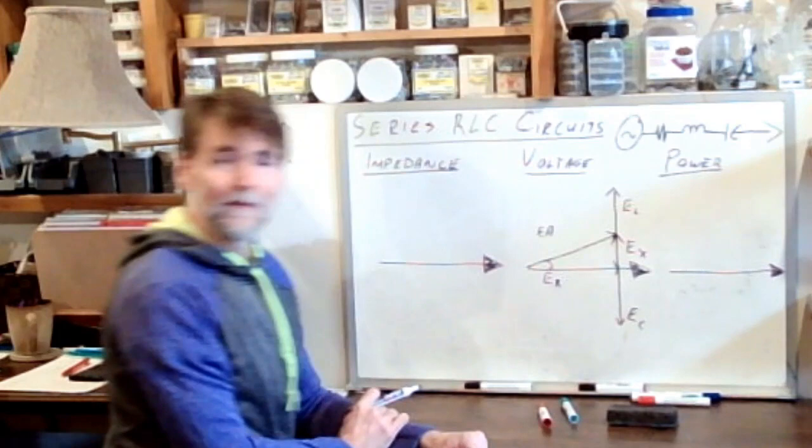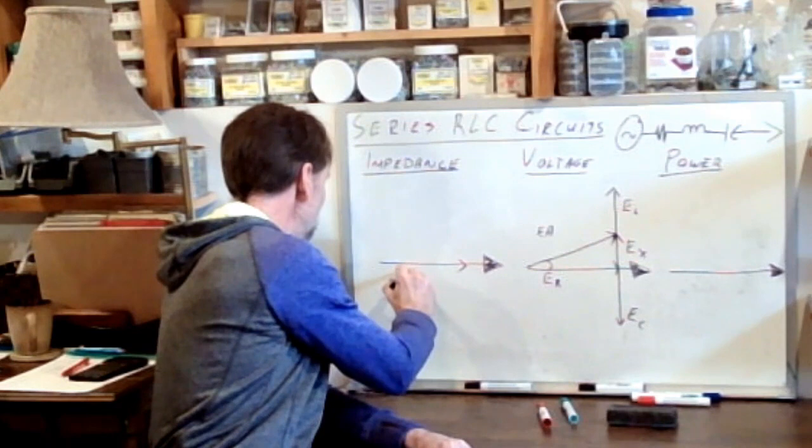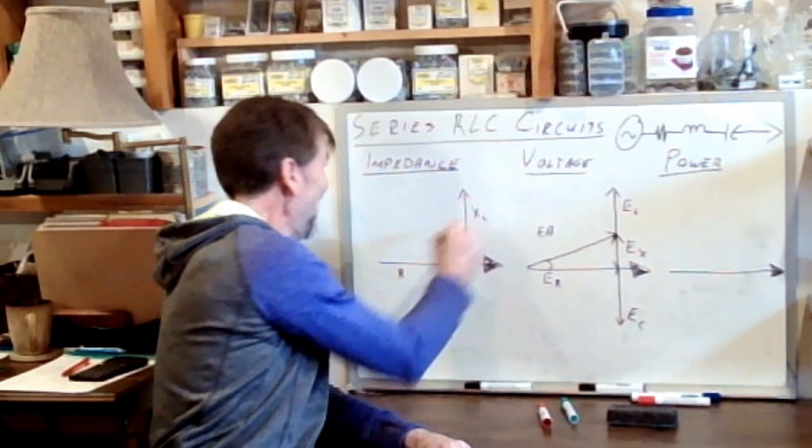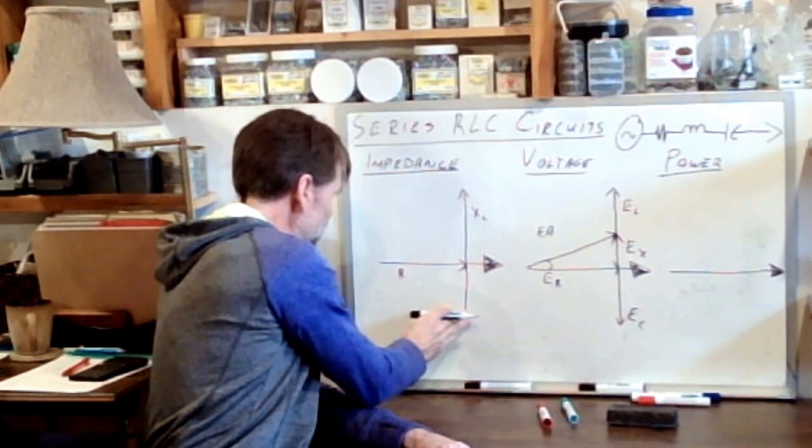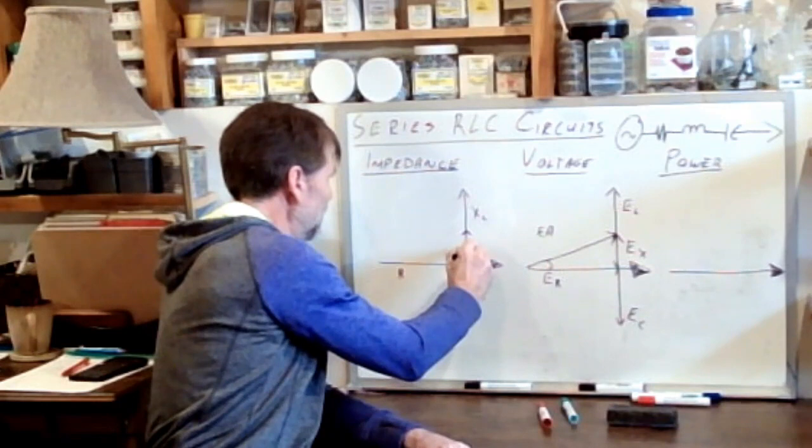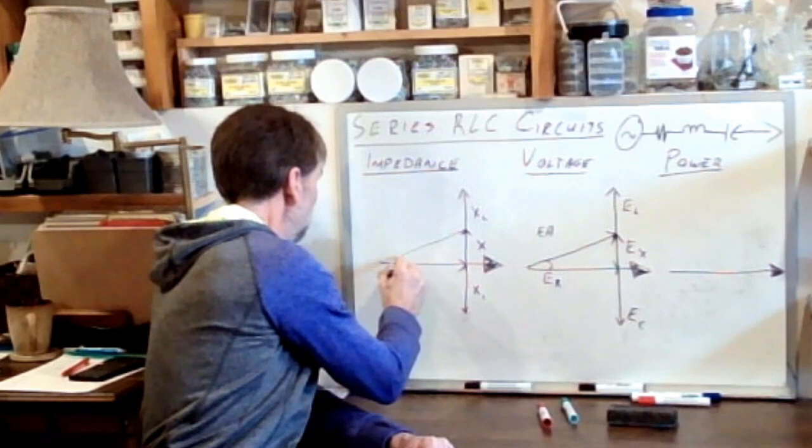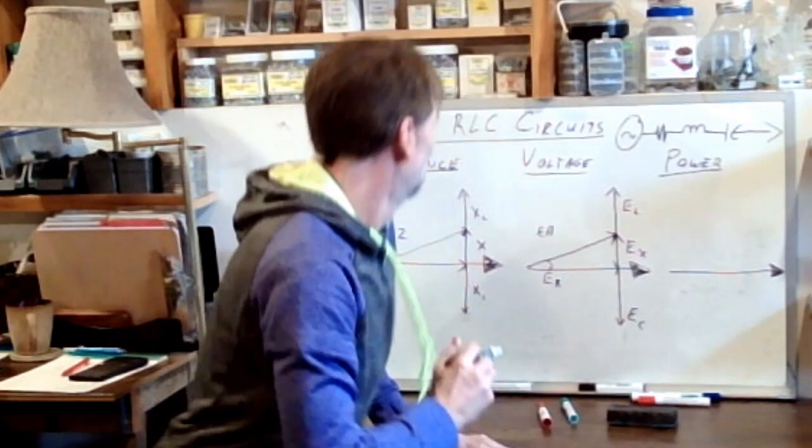Whatever this angle ends up being, it's going to be the same angle on all of our triangles. So there's R, there is XL, XC, and we end up with what I'm just going to call X. Draw the hypotenuse, and this is Z.